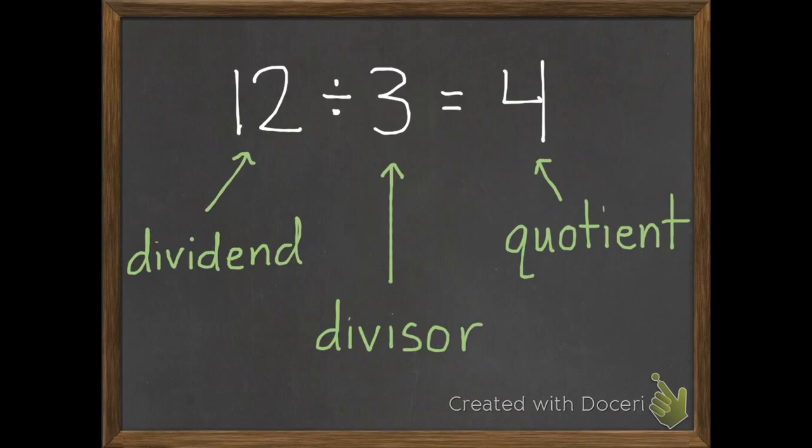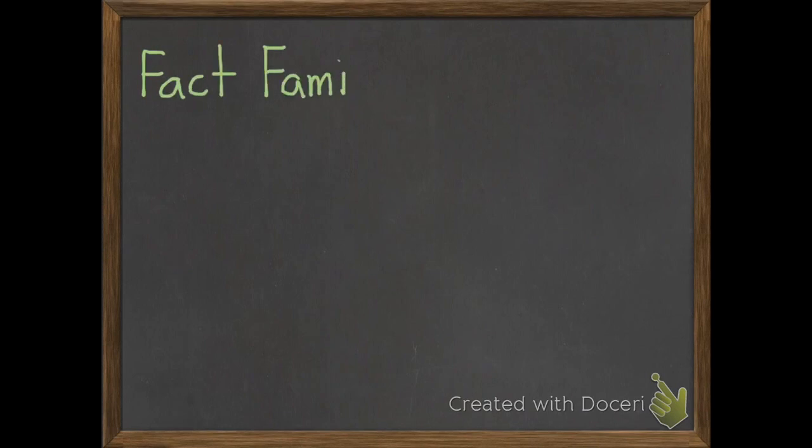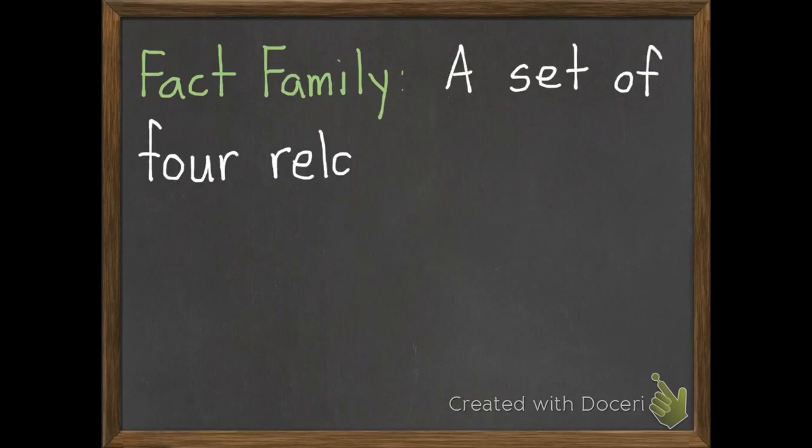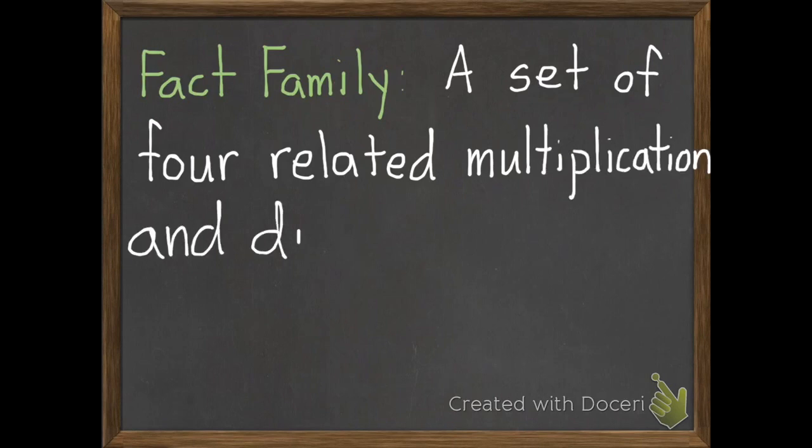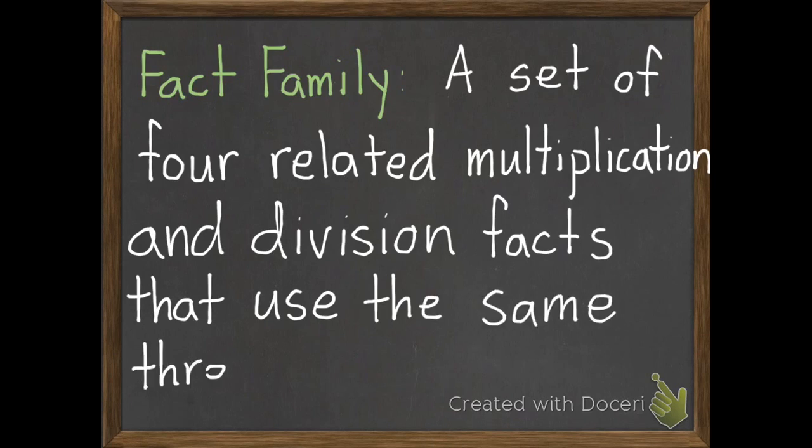Now that we've reviewed the different parts of multiplication and division problems, we have one vocabulary word, and that is fact family. A fact family is a set of four related multiplication and division facts that use the same three numbers. If you need to pause it, go ahead until you have that written down.